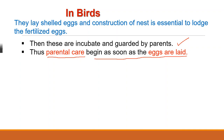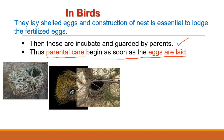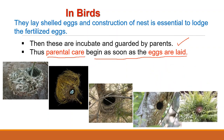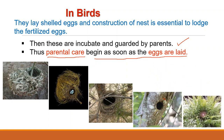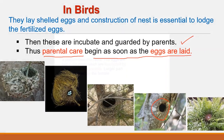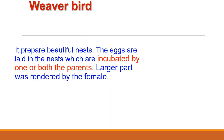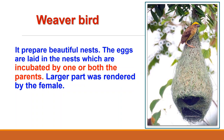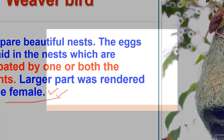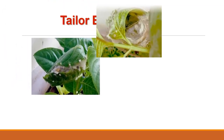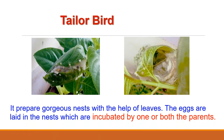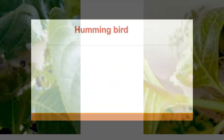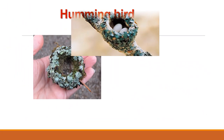Birds prepare a variety of nests. The nests of some birds consist merely of a few blades of grass in a depression of the ground or a tree hole. However, some species of birds like the weaver bird prepare really beautiful nests. The eggs are laid in the nests and are then incubated by one or both the parents. The larger part of the incubation is rendered by the female. Tailor birds prepare gorgeous nests with the help of leaves. In case of hummingbirds, they construct their nests so as to blend them with the surrounding environment.